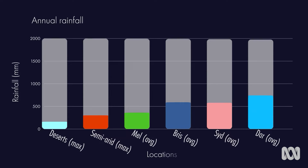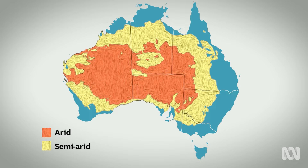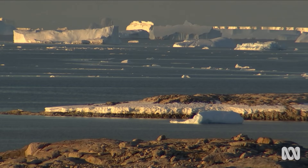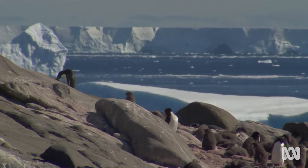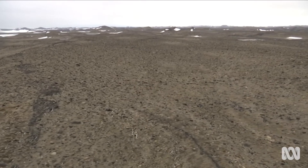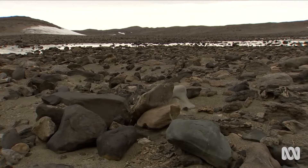Compare this with the average yearly rainfall in Melbourne, Brisbane, Sydney, and Darwin. So let's look at Australia. Did you know 70 per cent of the mainland gets less than 500 millimetres of rain each year? That means most of Australia can be classified as arid or semi-arid. In fact, Australia is the driest inhabited continent in the world, but it's actually Antarctica that's the driest continent overall. Over the whole continent, Antarctica only averages about 150 millimetres of precipitation each year, but people don't really live in Antarctica permanently.